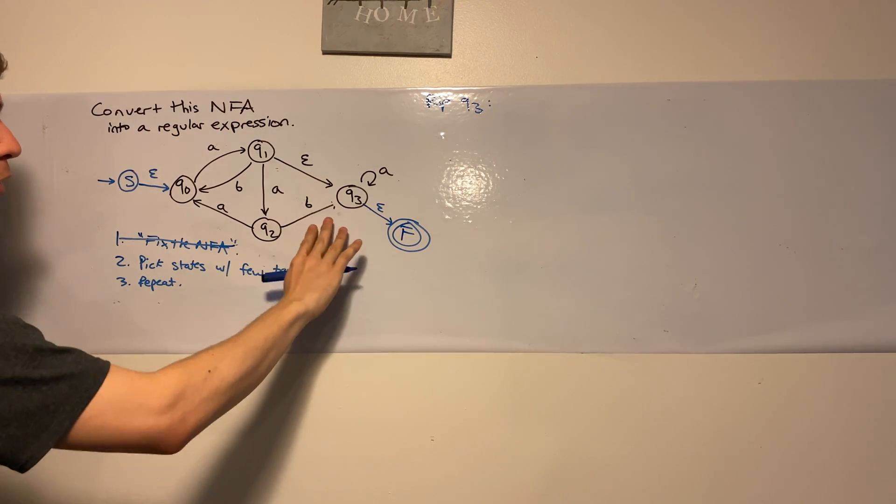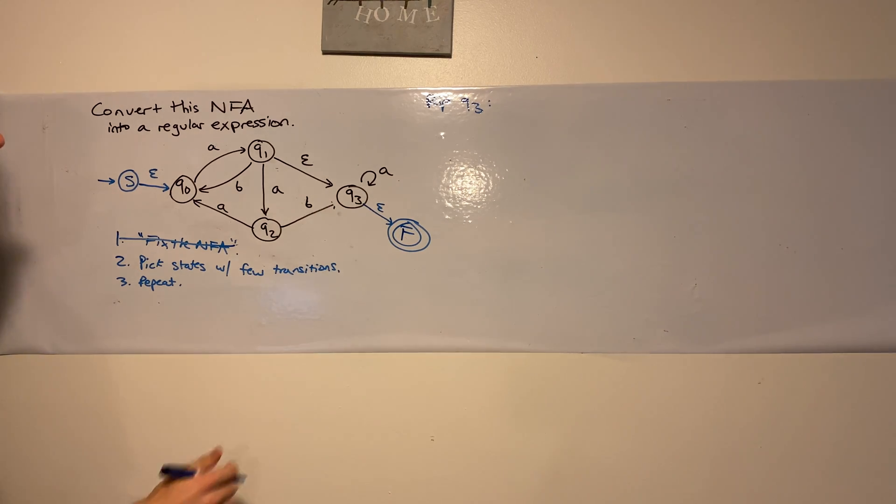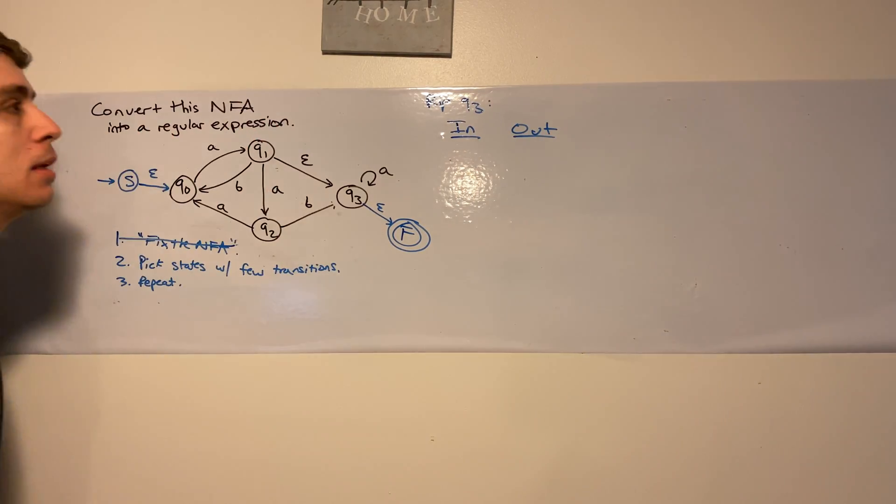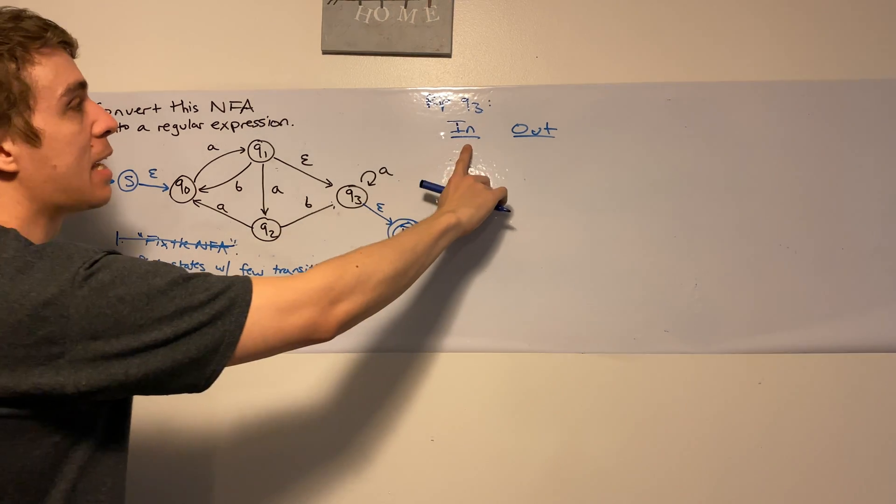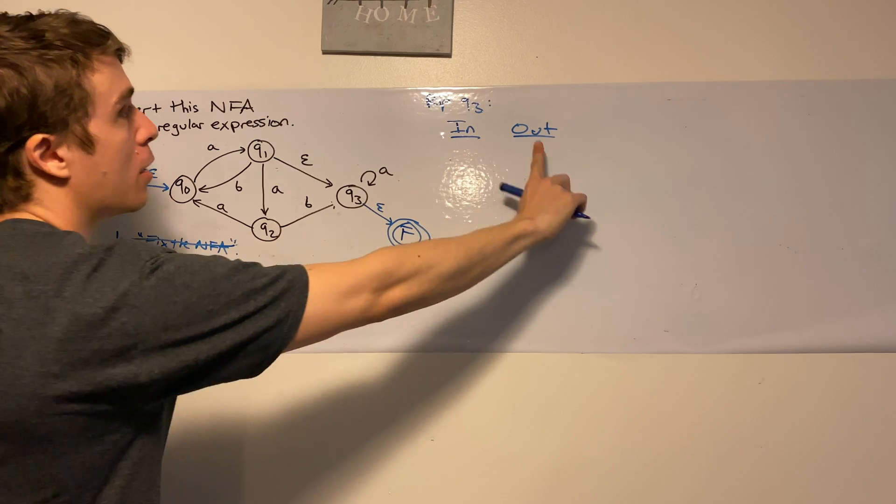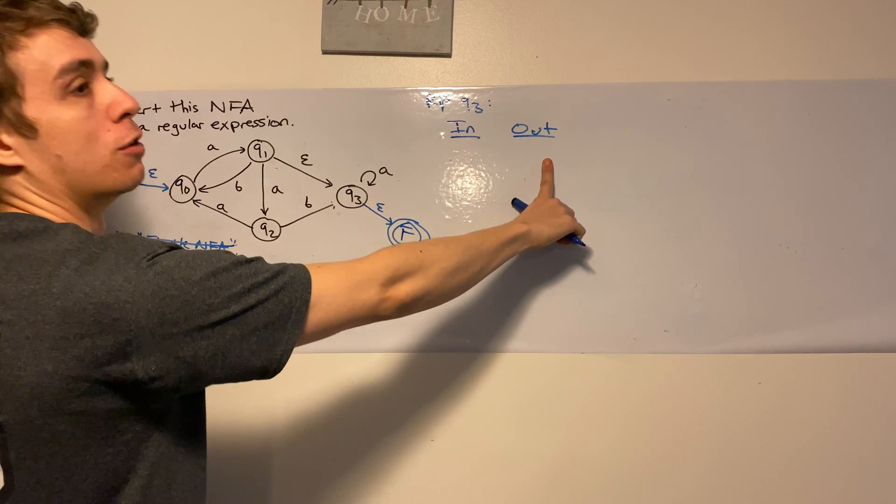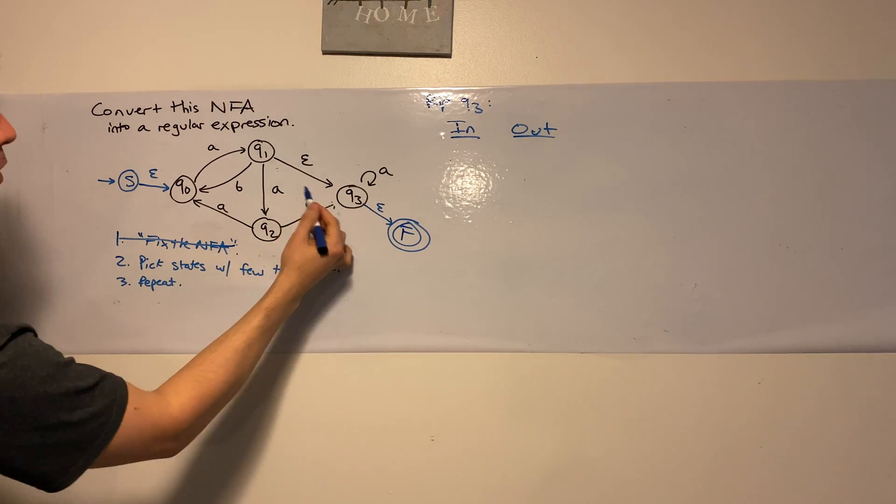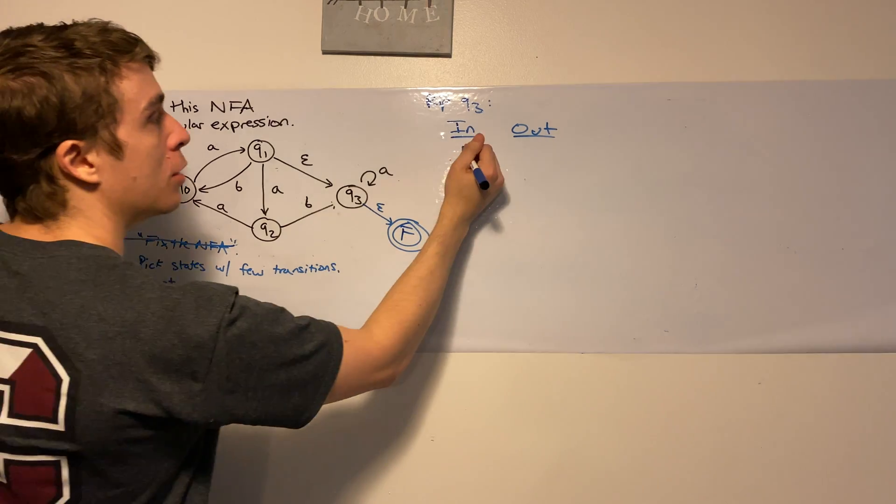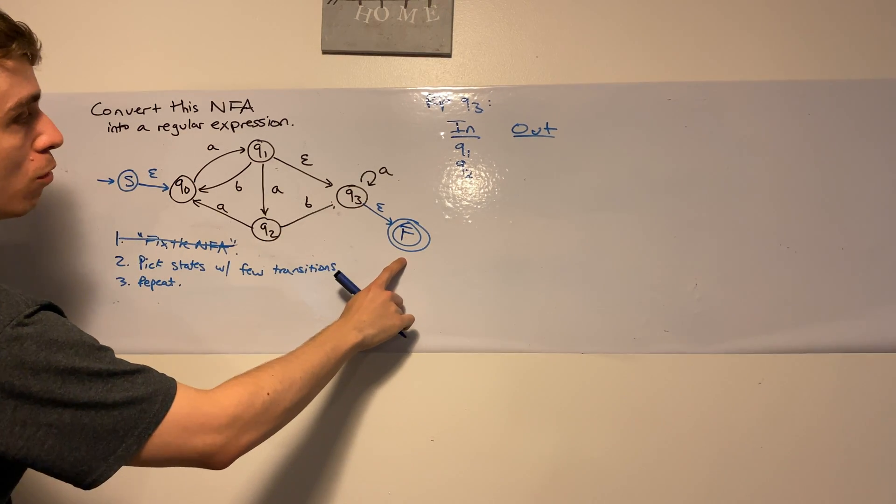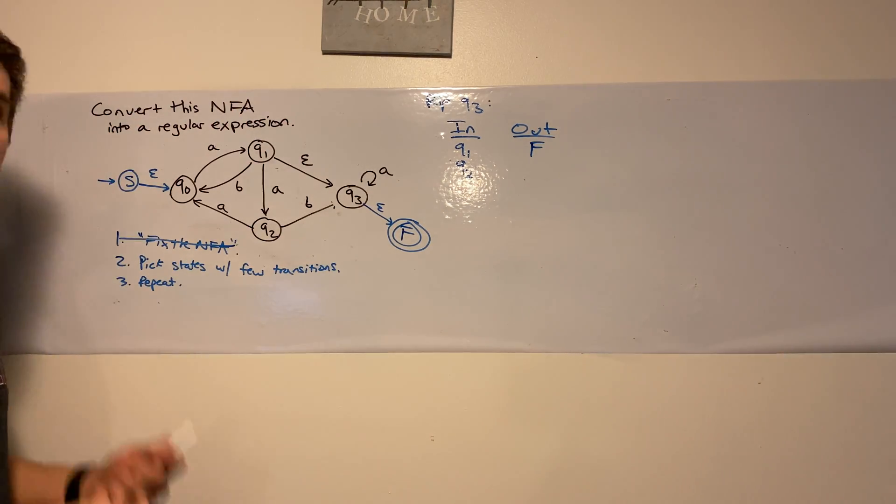So what do we do here? Well, we can pick any of the four states in the middle, not the start and the final state, but one of the four middle states in this case. So Q3 looks like a good candidate because it has relatively few transitions. But you can pick any state that you want. As long as you apply the method correctly, you can pick any state. But Q3 will make our lives as easy as possible in this case. So let's rip out Q3.